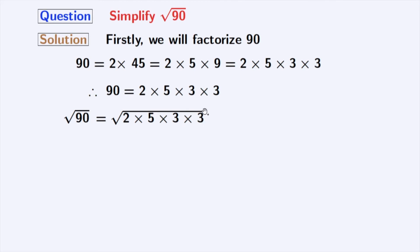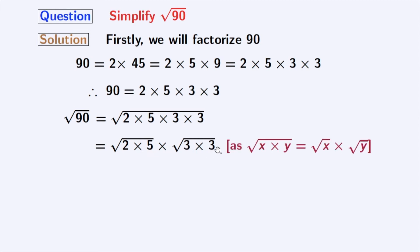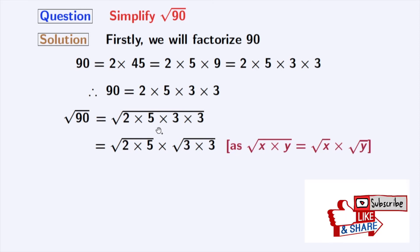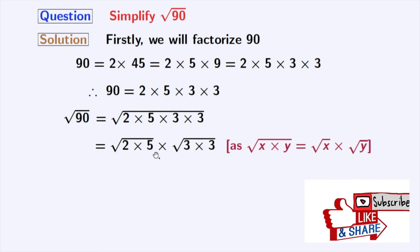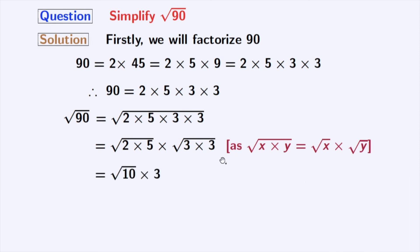After grouping, we get square root of 2 times 5, times square root of 3 times 3. Here, we have used the rule: square root of x times y is equal to square root of x times square root of y, where x is 2 times 5 and y is 3 times 3. In the second square root, we have used the rule: square root of a times a is equal to a, where a is 3 here. Multiplying this, we get 3 root 10. And this is our final answer.